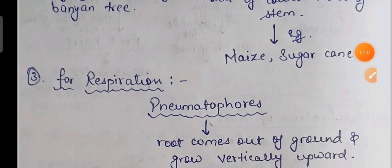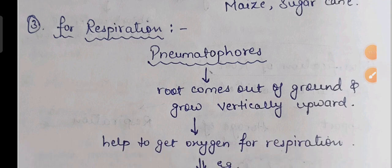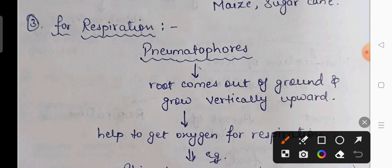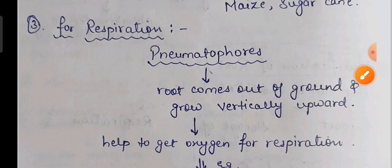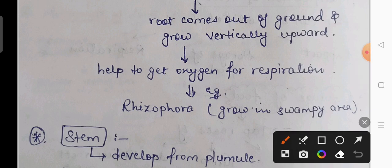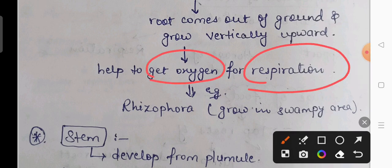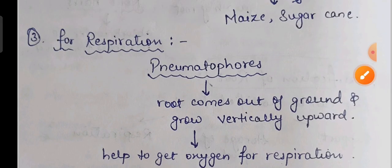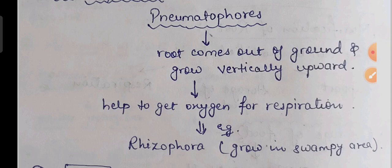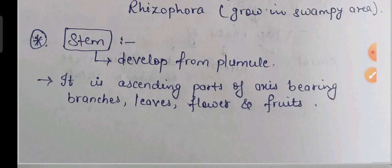The third modification is for respiration. The roots that help in respiration are called pneumatophores. Pneumatophores are roots that come out of the ground and move vertically upward. Normally, roots show positive geotropism — movement towards the earth — but pneumatophores come out of the ground and move vertically upward. This movement allows the plant to obtain additional oxygen for respiration. The most common example is Rhizophora, which is found in swampy areas.